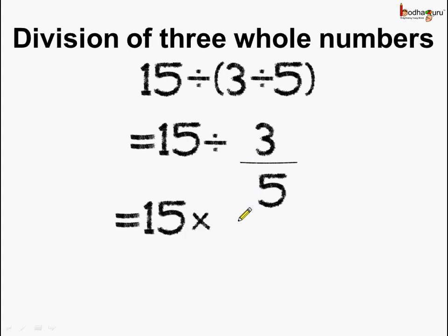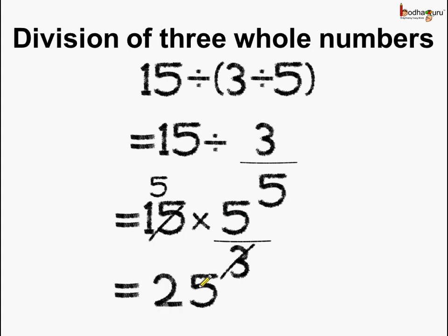So it becomes 15 multiplied by the reciprocal of 3 by 5, which is equal to 5 by 3. Now 3 times 5 is equal to 15. So the answer is equal to 5 multiplied by 5, which is equal to 25.